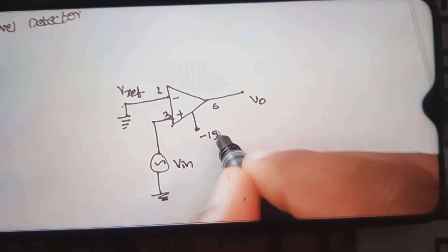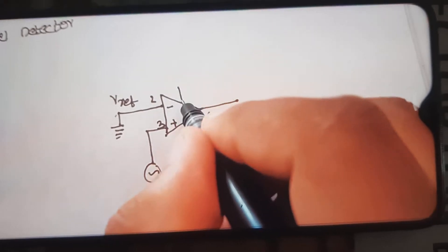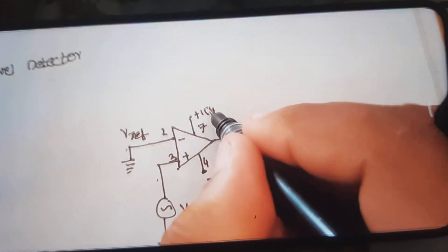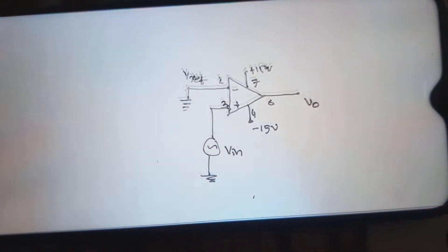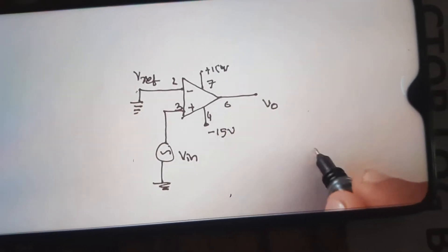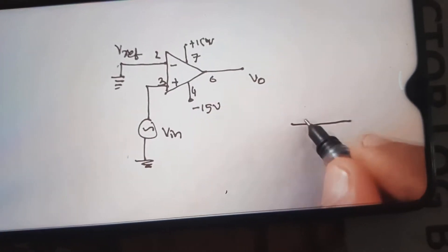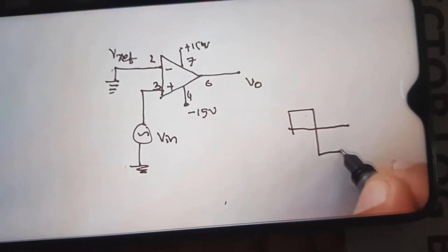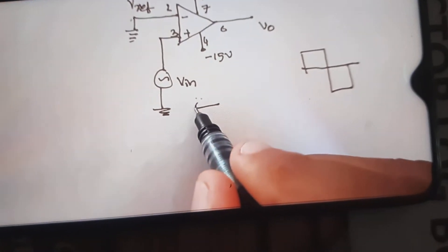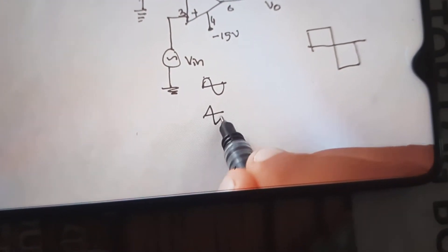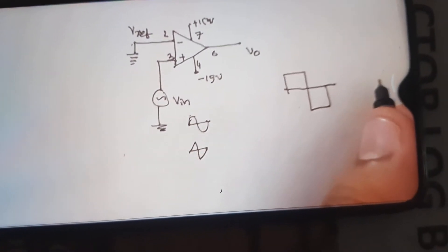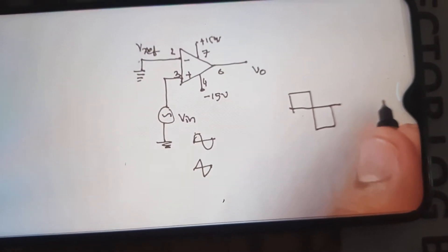Minus 15 volts is connected at pin 4, and plus 15 volts at pin 7. The output of this circuit will be a square wave irrespective of the type of input signal applied — it might be sine, triangle, or anything. The output voltage will be a square waveform for a comparator circuit.